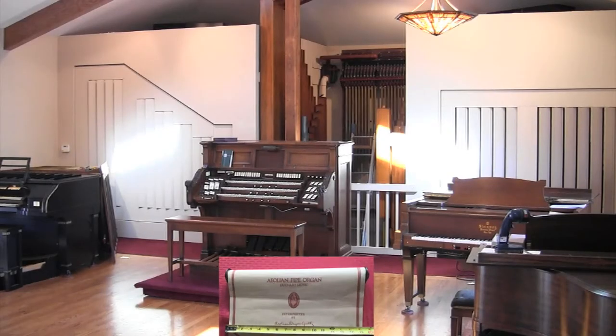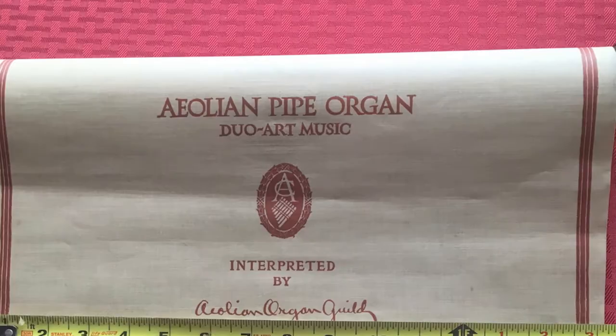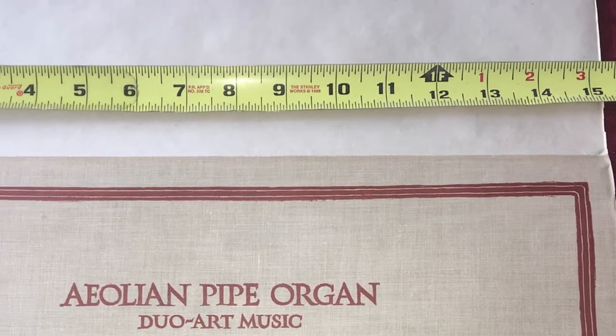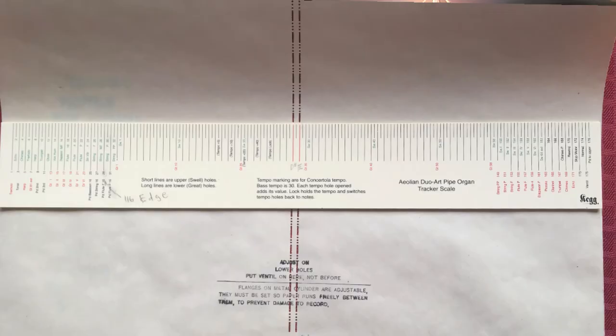How does the dual art player pipe organ work? It plays a paper roll 15 and 1 quarter inch wide. The roll has 176 positions for the holes.